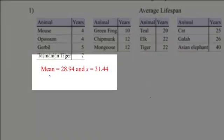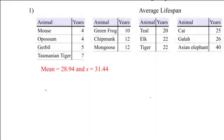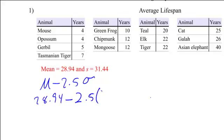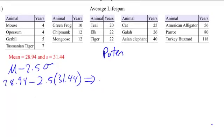Alright, so I already have my mean and standard deviation. So I'm going to use a formula saying two and a half standard deviations away from the mean. So that's going to be mu minus 2.5 standard deviations. So this is 28.94 minus two and a half times 31.44. This will give me all my potential outliers.